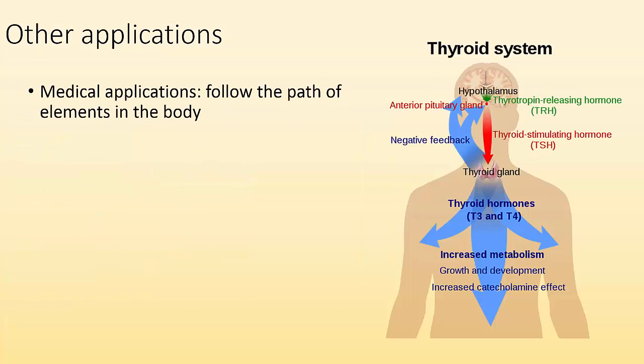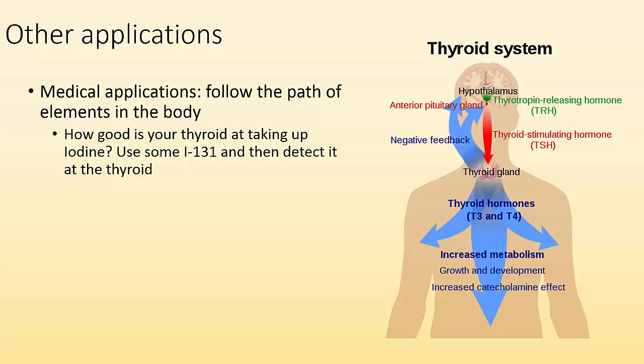All right. Anyway, other applications. There's medical applications of these radiotracers. You can follow the path of elements in the body. A big one is iodine-131 and your thyroid. Your thyroid needs iodine-131 to work effectively. It needs that so it can make these thyroid hormones. And the thyroid hormones control your metabolism in your body. If you don't have enough activity of your thyroid, you get hypothyroidism and your body kind of slows down. You have loss of appetite. You put on weight and your metabolism is slowed down. Whereas if you have hyperthyroidism, you're constantly hungry and you can't put on weight. You have weight loss because your metabolism is too high. So yeah, I thought that was pretty neat, its applications.